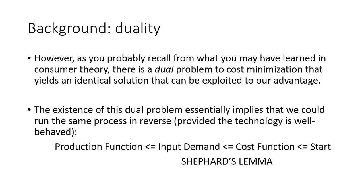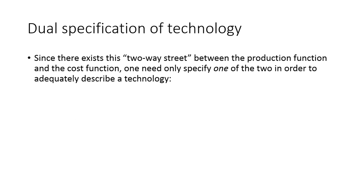So this is the idea. We can go forward from the production function to the cost function through cost minimization, or we can go backwards from the cost function to the production function using Shepard's Lemma. There's this two-way street between the production function and the cost function. I could give you F and you could tell me what C is, or vice versa. I don't actually need to specify them both together because one actually implies the other, given this optimizing behavior of the firm.